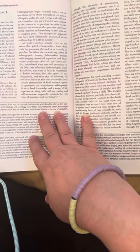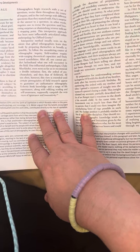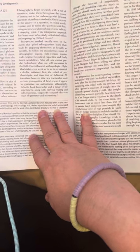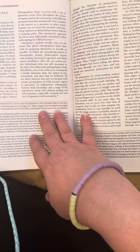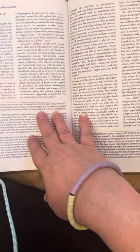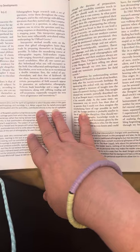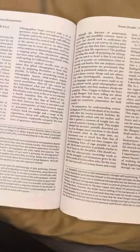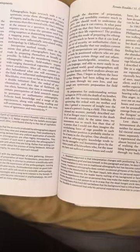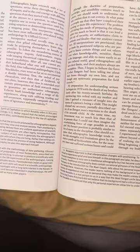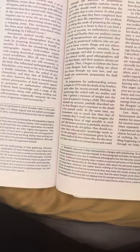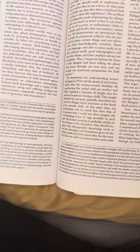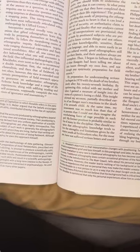This interpretive approach has been most influentially articulated within anthropology by Clifford Geertz. Interpretive method usually rests on the axiom that gifted ethnographers learn their trade by preparing themselves as broadly as possible. To follow the meandering course of ethnographic inquiry, field workers require wide-ranging theoretical capacities and finely tuned sensibilities. After all, one cannot predict beforehand what one will encounter in the field. One influential anthropologist, Clyde Kluckhohn, even went so far as to recommend a double initiation, first the ordeal of psychoanalysis and then that of fieldwork.